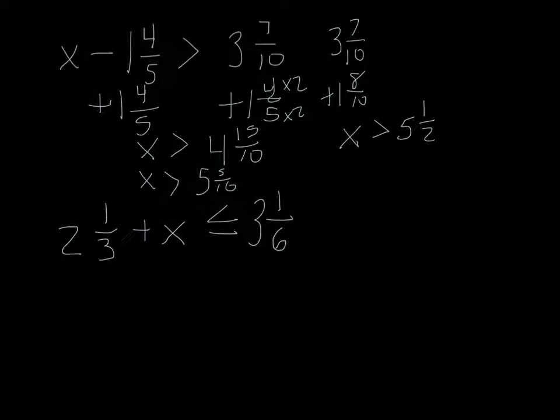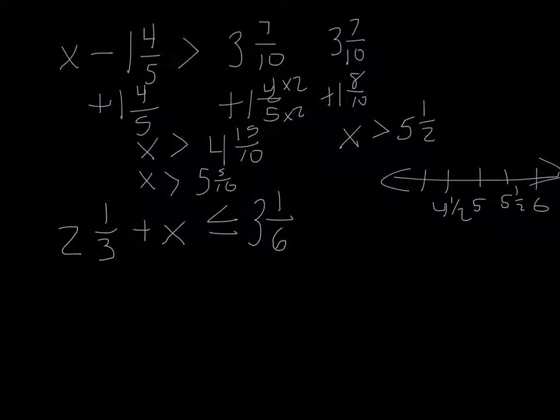Which you would then graph by putting maybe the 5 in the middle, and the 5 and 1 half. 6, 4 and 1 half, 4. We'd have an open circle, not over the 5. The open circle would be over the 5 and 1 half, and it would be a greater than, so it would go in that direction, like that.